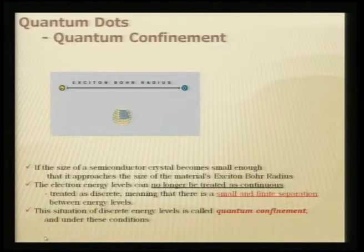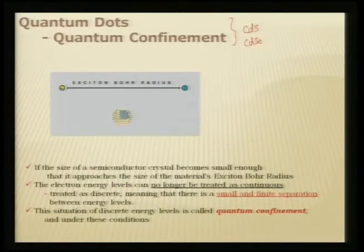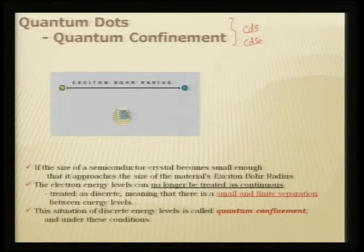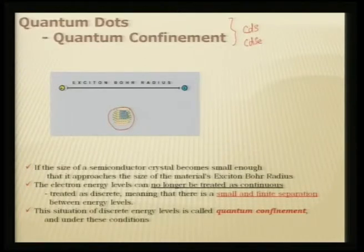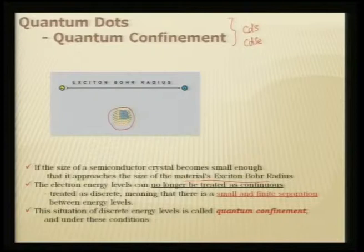In quantum confinement you encounter an entirely different set of properties not true for bulk materials. In quantum dots — especially CdS or CdSe-based compounds — the exciton Bohr radius is the distance between the electron and hole. If the particle is much smaller than the exciton Bohr radius, you have quantum confinement. When a semiconductor crystal approaches the exciton Bohr radius, the electron energy levels can no longer be treated as continuous but as discrete with finite separation.